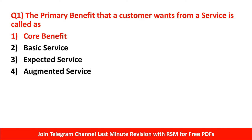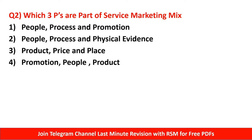The primary benefit that a customer wants from a service is called core benefit. Next question: which three Ps are part of the service marketing mix? The basic 4Ps of marketing are product, price, place, and promotion. In addition, three extra Ps are added — people, process, and physical evidence. So the right answer is people, process, and physical evidence. Total service marketing mix has seven Ps. This is a very important MCQ to remember from an exam perspective.